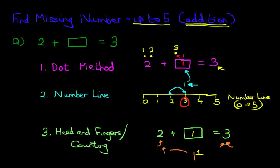Now, do you notice that using the dot method, we had the answer as 1. Using the number line, we also had 1. And using the head and fingers method, we also had 1.